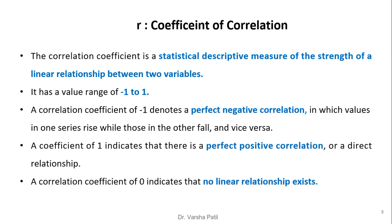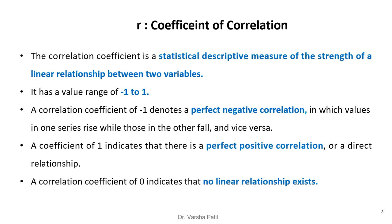Now let's see what is meant by coefficient of correlation. The correlation coefficient is a statistical descriptive measure of the strength of the linear relationship between two variables. The word 'linear relationship' is very important, because the coefficient of correlation focuses on the linear relationship between the two variables. It has a value range from minus 1 to 1.